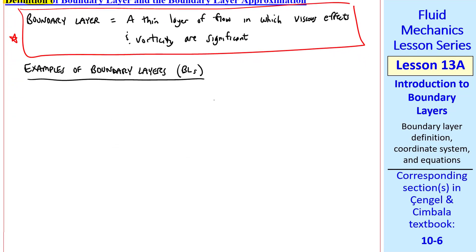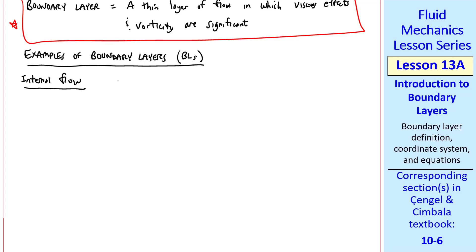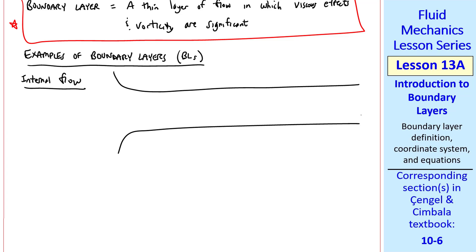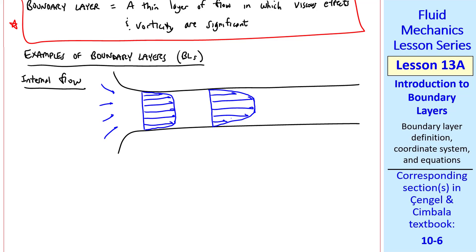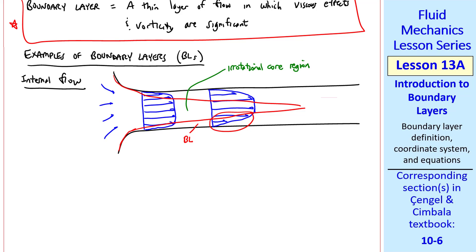We can have boundary layers in both internal and external flow. For internal flow, consider a well-rounded entrance for a pipe. Flow enters smoothly through the bell mouth, and if it's well designed, the velocity profile will be nearly uniform, except for the region close to the wall. The wall wraps around axisymmetrically. In this entrance region, the velocity profile changes downstream. There's a thin boundary layer along the wall where the velocity changes rapidly. In the inner part of the pipe, the flow is nearly irrotational — we call it the irrotational core region.